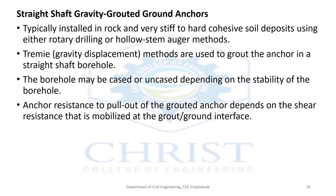The first type is straight shaft gravity grouted ground anchors. These are typically installed in rock and very stiff to hard cohesive soil deposits using either rotary drilling or hollow stem auger methods. Tremie methods are used to grout the anchor in a straight shaft hole — similar to the tremie pipe in concrete technology where by gravity displacement we deposit material to form a column-like structure.